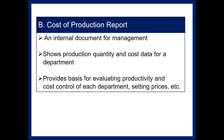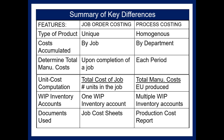We will be preparing a cost of production report, which replaces the job cost sheet and is an internal document for management decisions. It provides information about the costs incurred and the inventory produced, and is used for evaluating productivity, cost control, setting prices, and more. There is a summary of key differences in your notes that you will want to review after working some problems — be sure to reference that when you go back to study.